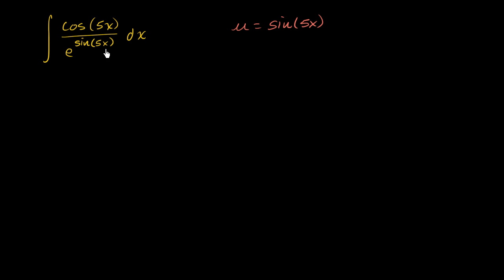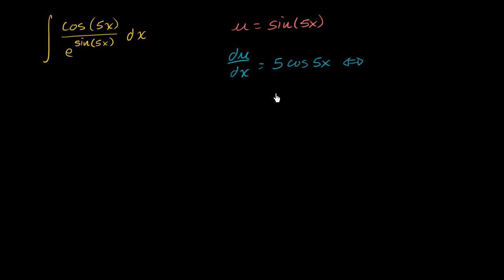If u is equal to sine of 5x, we have something that's pretty close to du up here. Let's verify that. So du/dx — the derivative of u with respect to x — we just use the chain rule. The derivative of 5x is 5, times the derivative of sine of 5x with respect to 5x, which is just cosine of 5x. In differential form, du is equal to 5 cosine 5x dx.